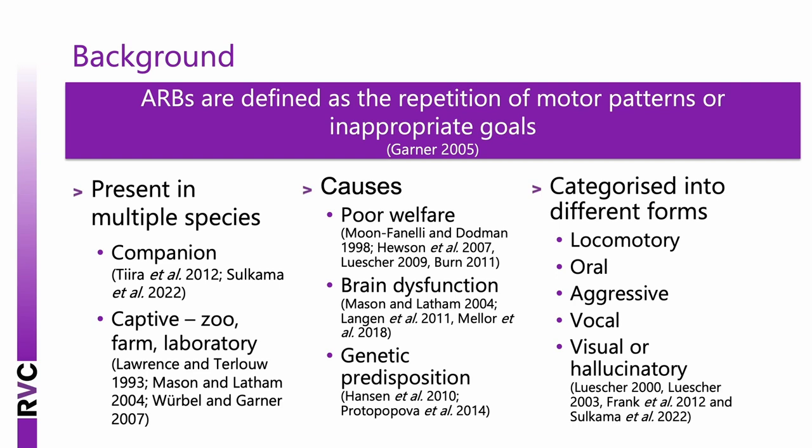ARBs can be caused by poor welfare including frustration or lack of stimulation, usually linked to confinement and husbandry that limits behavioural expression, or by pain. They can also be due to brain dysfunction originating in the basal ganglia — a release of dopamine increases the sensitivity of the basal ganglia and hyperactivates the direct pathway that initiates movement, triggering repetition of motor patterns. ARBs can also result from genetic predisposition: in minks, ARB development is about 30% heritable, and in dogs, siblings seem to share a predisposition. In dogs, ARB forms fall into five categories: locomotory, oral, aggressive, vocal, and visual (sometimes termed hallucinatory).